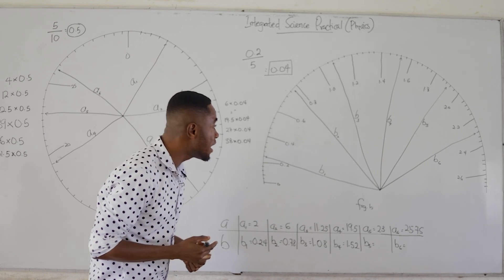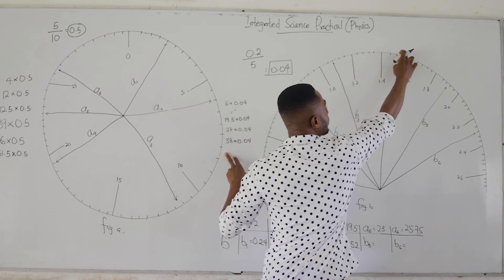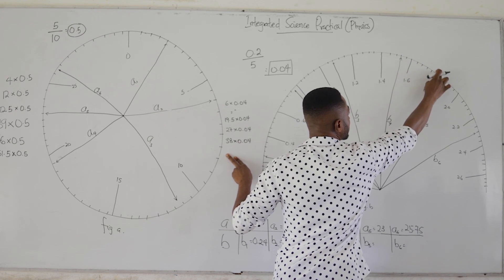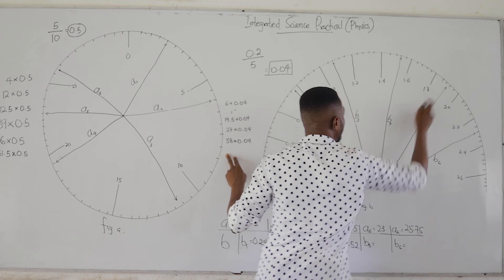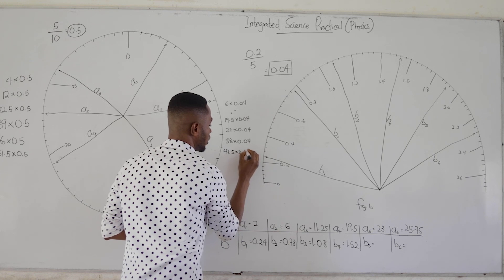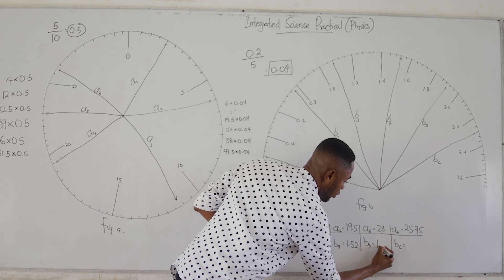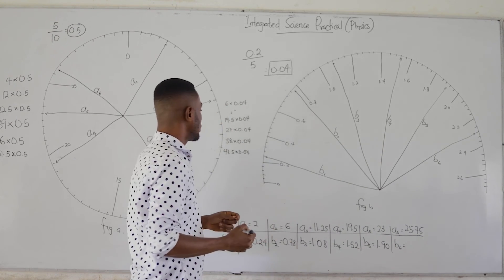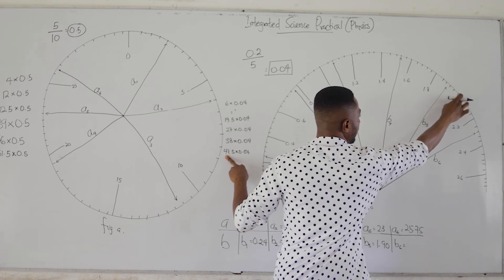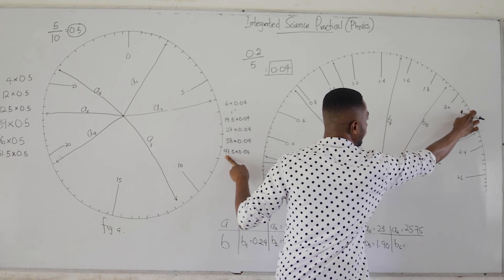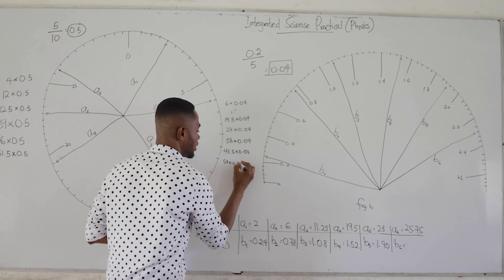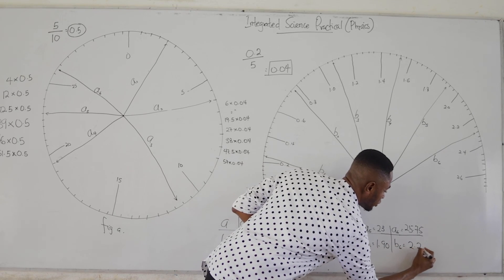Then for b5, continuing from 38: 39, 40, 41, 42, 43, 44, 45, 46, 47, and a half — so 47.5. Continuing: 48, 49, 50, 51, 52, 53, 54, 55, 56, 57. So 57 times 0.04 gives us 2.28.